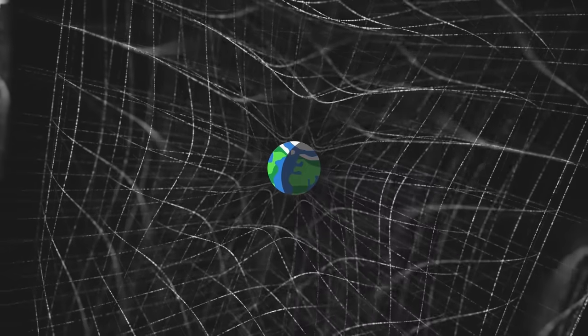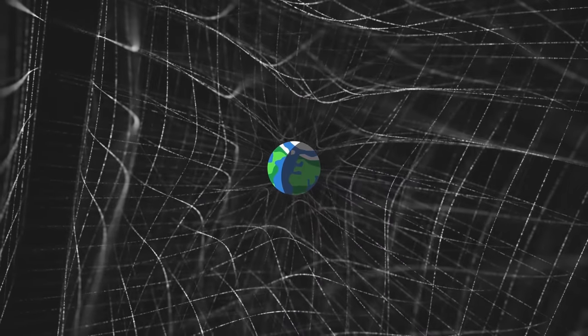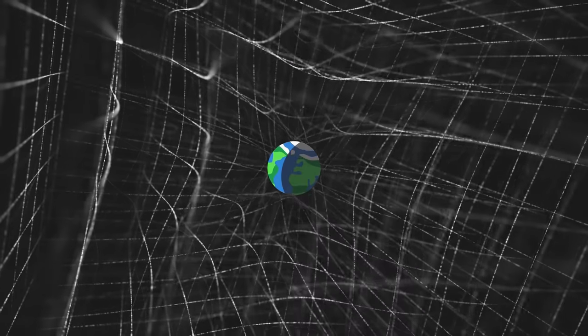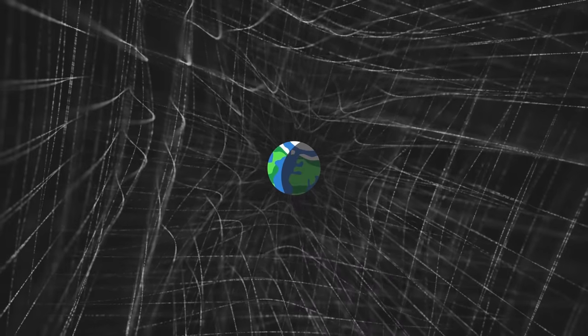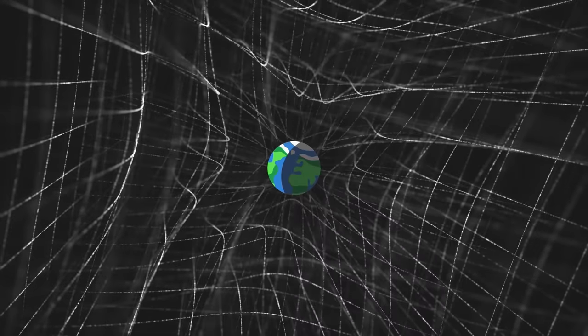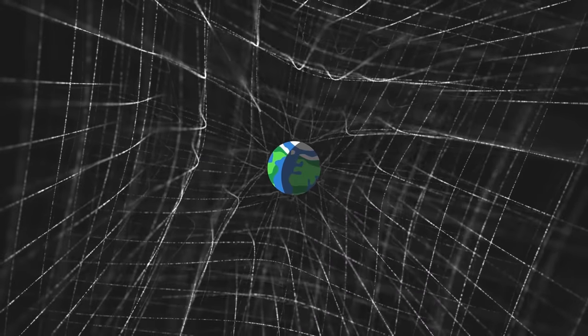For us, the curvature of space-time appears as an endless contraction of the grid. In technical terms, we say that the volume contained between geodesics shrinks over time because of the curvature.